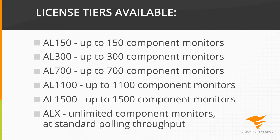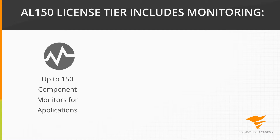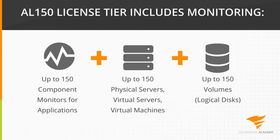For each license tier, in addition to component monitors for applications, you'll be able to monitor physical and virtual servers and volumes. For example, the AL150 license tier includes monitoring up to 150 component monitors, up to 150 nodes — which could be physical servers, virtual servers, or virtual machines — and up to 150 volumes. As your monitoring requirements increase, you can easily upgrade to higher licensing tiers.